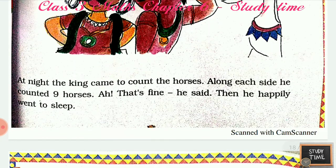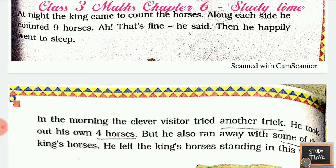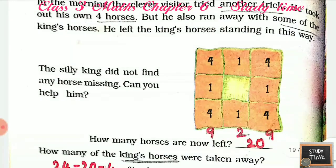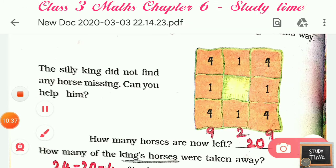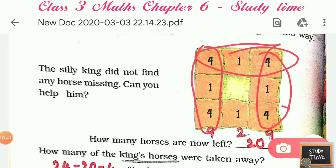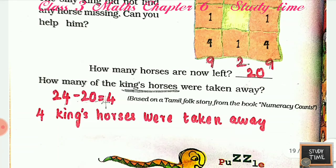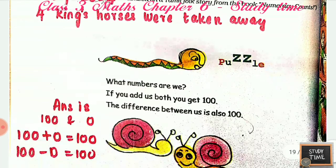At night the king came to count — along each side he counted nine horses and said 'That's fine,' then went to sleep. In the morning the clever visitor tried another trick: he took out his own four horses but also ran away with some of the king's horses. He arranged the remaining horses so each side still showed nine, but the total was only 20. How many of the king's horses were taken away? 24 minus 20 is 4. What numbers are we? If we add both we get 100, the difference is also 100 — the answer is 100 and 0, because 100 plus 0 is 100 and 100 minus 0 is 100.